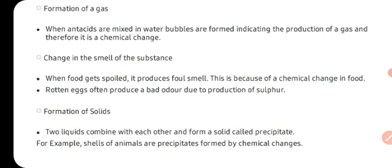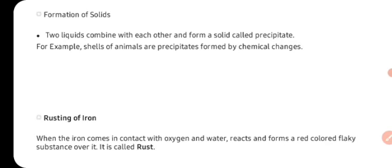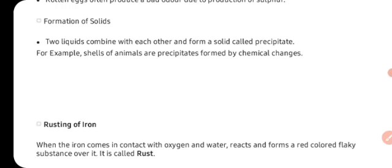Change in the smell of the substance — when the food gets spoiled, it produces foul smell. Jab bhi koi khana sadh raha hota hai, toh usmein se aapko smell nikalti hoi dikhai deti hai. This is because of a chemical change in the food. Rotten eggs often produce a bad odor due to production of sulfur gas. Formation of solid — two liquids combine with each other and form a solid called precipitate. Agar kisi do liquid ko mila rahe hai, aur kuch solid substance unke milne se ban raha hai, toh hum usko precipitate kehte hai. Jaisi ki shells of animals are precipitates formed by chemical change — jo animals ki body mein shells hoti hai, jaisi ki snail ya phir pearl oyster, toh jo unki shells banti hai, woh ek tariqe se chemical change ke hi result mein banti hai.